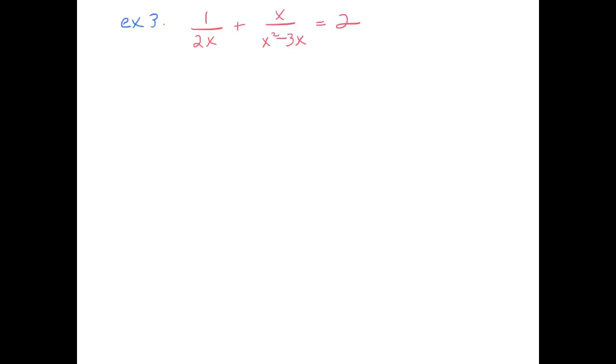Alright, so here's an example where our denominators don't seem to match at all. But before I actually consider what the lowest common denominator is, I should probably factor this one. So let's factor out an x. That leaves me with x minus 3. Now I can see that they actually do share a common factor of x.